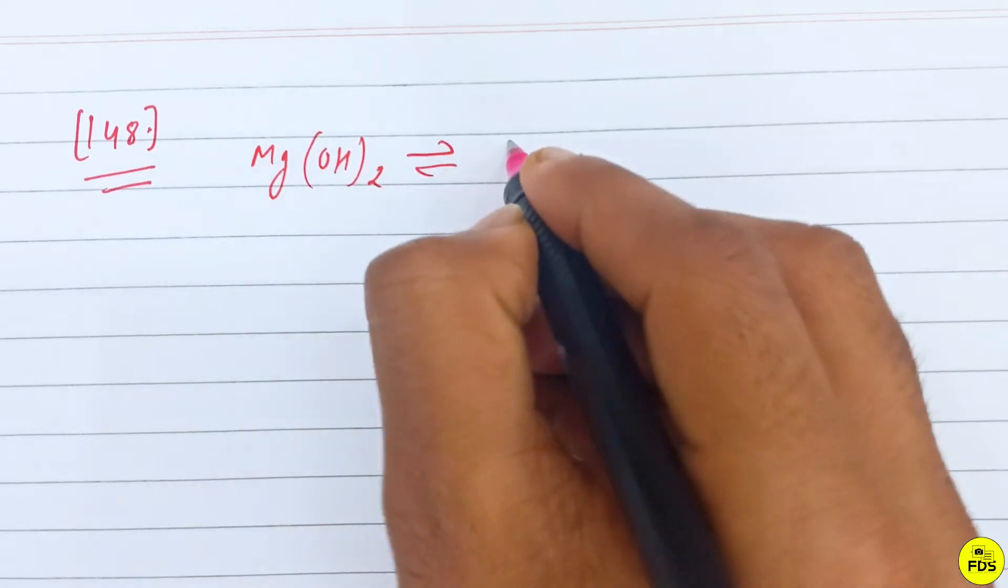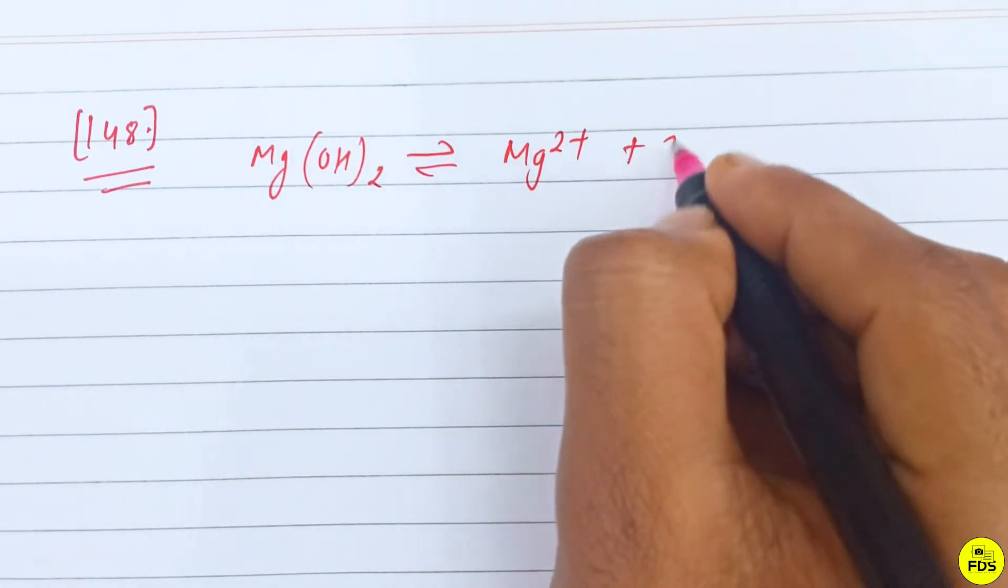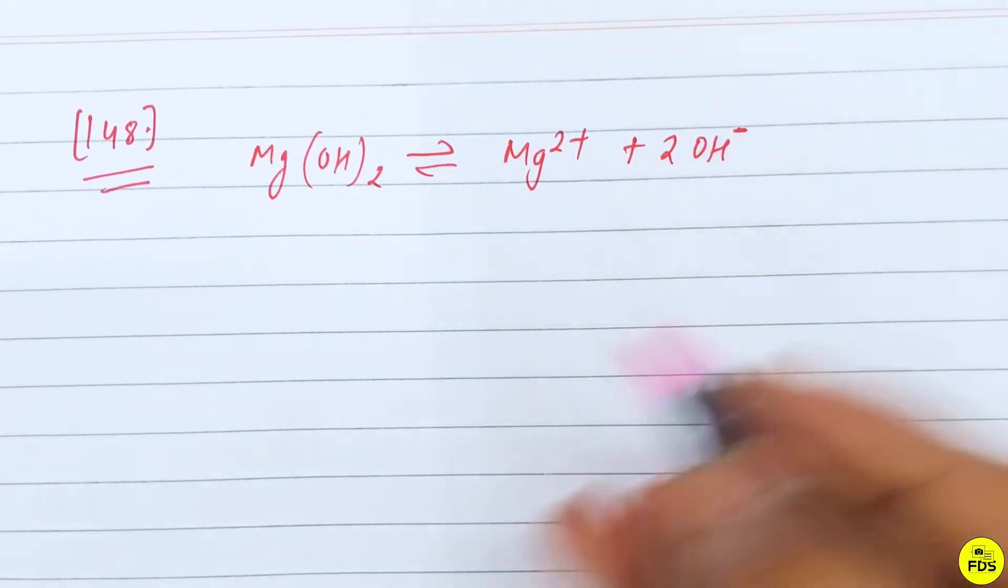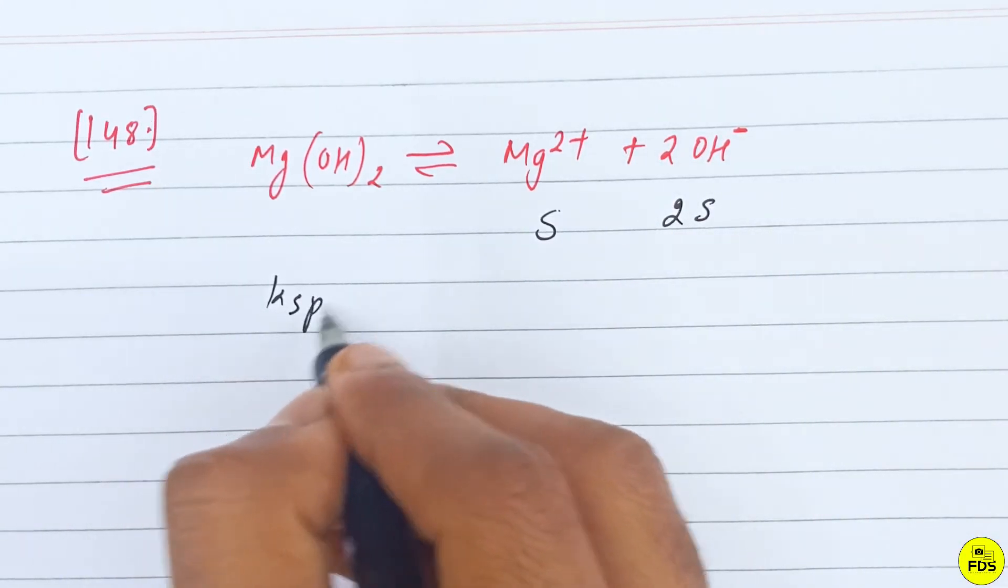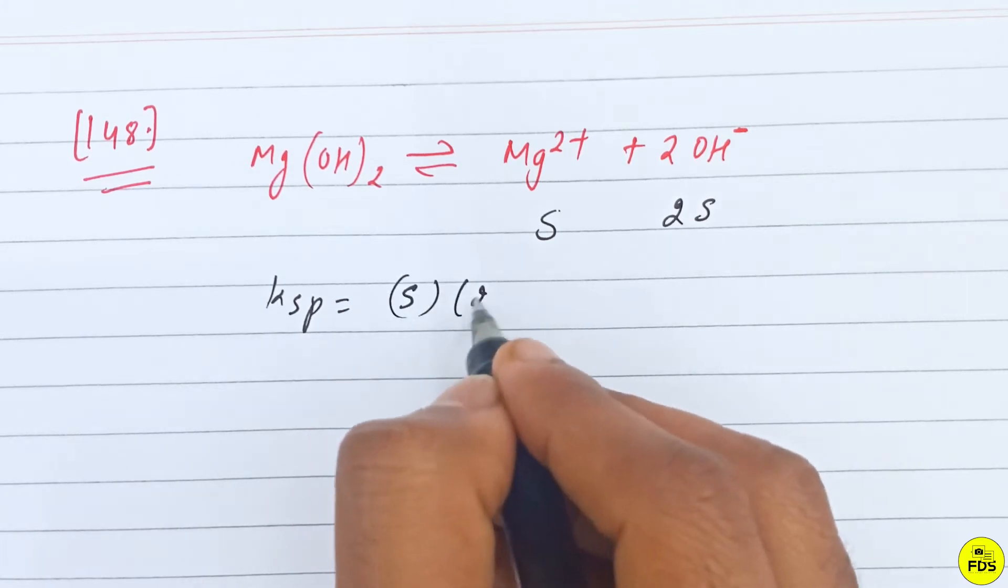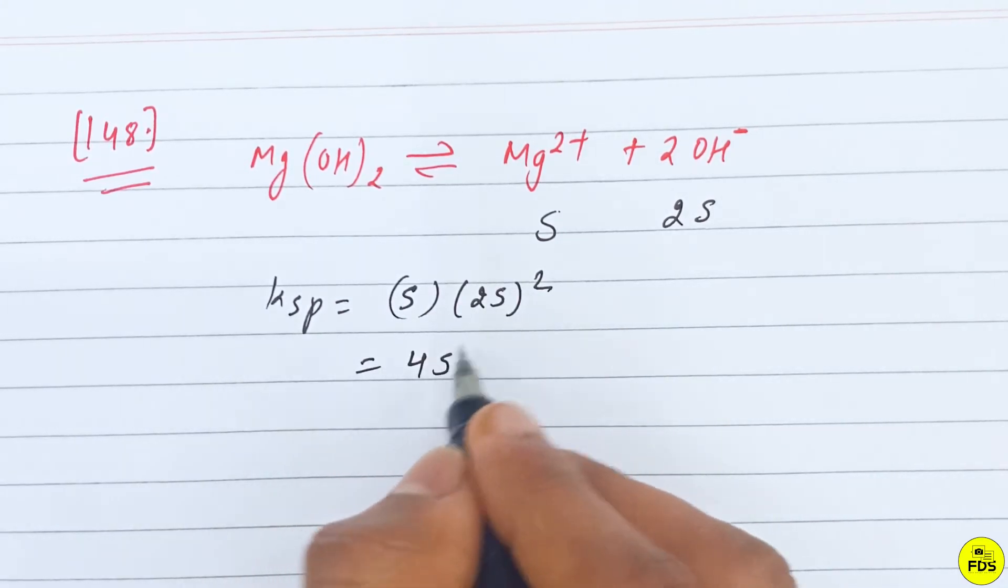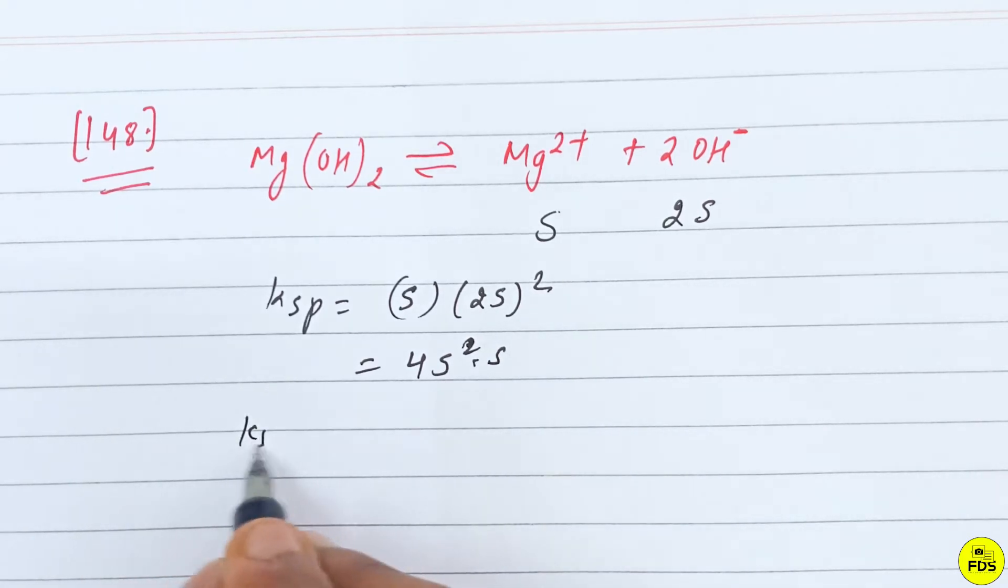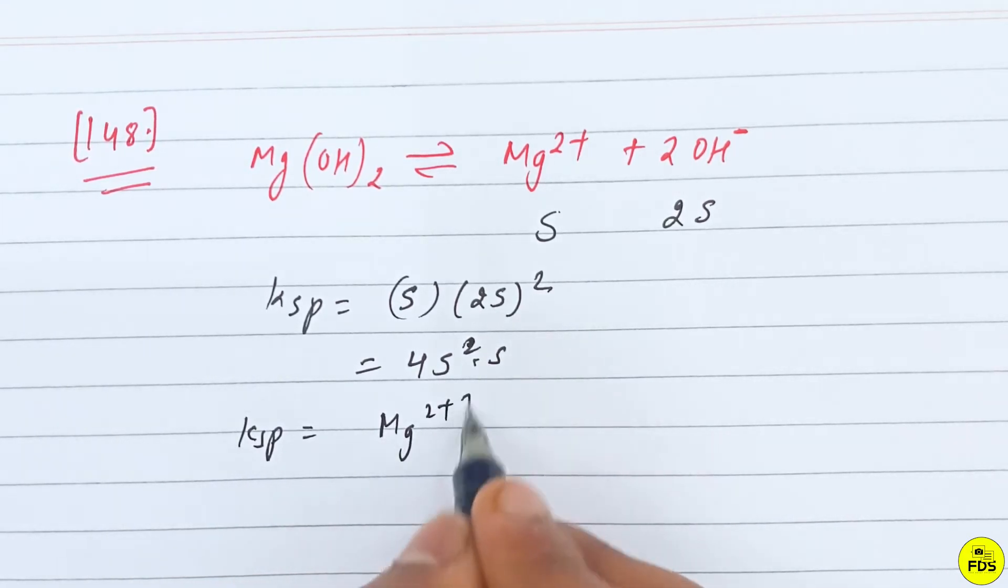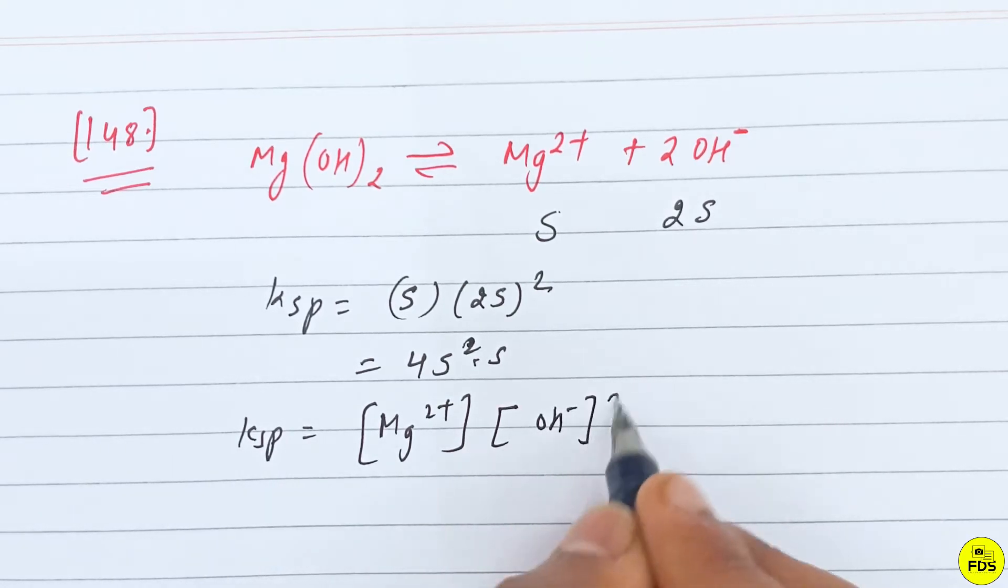Mg(OH)2 is equal to Mg2+ plus 2OH-. Ksp is equal to S squared into S. Here Ksp is equal to Mg2+ concentration times OH- squared concentration.